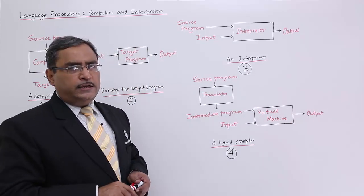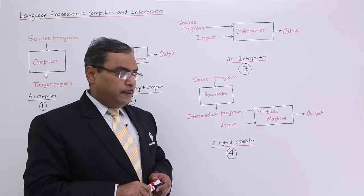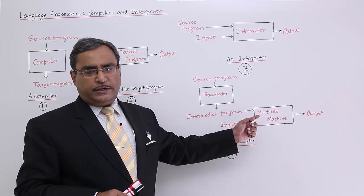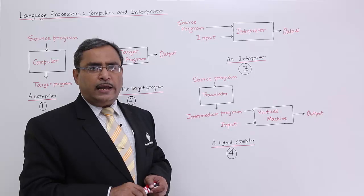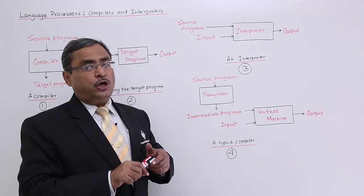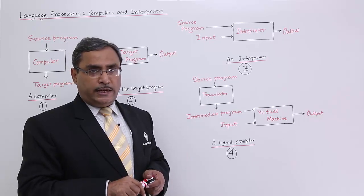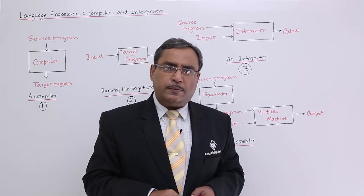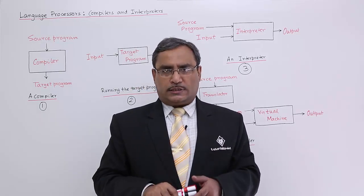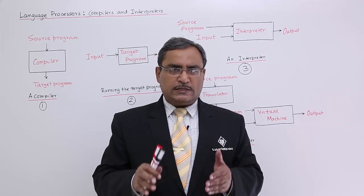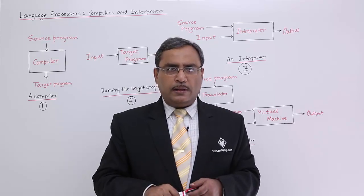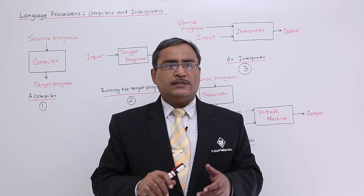Sometimes we also have a just-in-time compiler. Prior to execution, the intermediate program is translated to the required target program in the target language suitable for the platform, and then the program gets executed. Compilers of this sort are known as just-in-time compilers. In this way, compilers and interpreters are treated as language processors. In our next videos, we will be discussing many more issues on compilers. Please watch all of them, be with us, and thanks for watching this video.